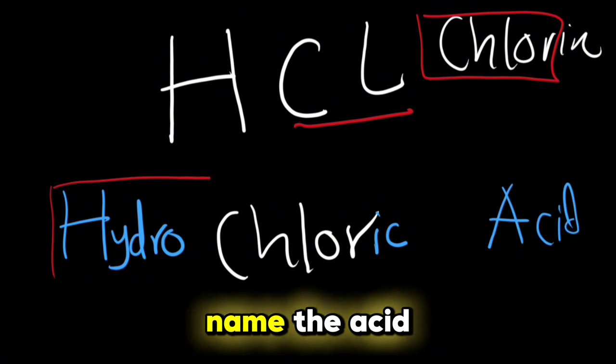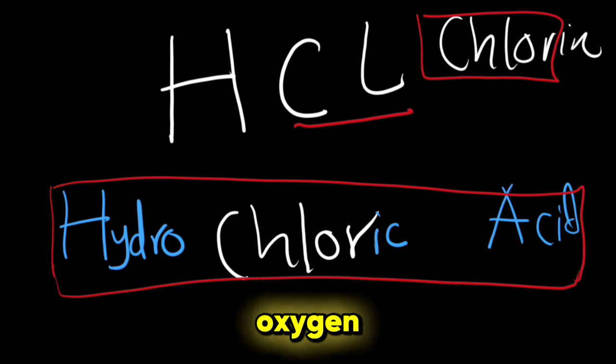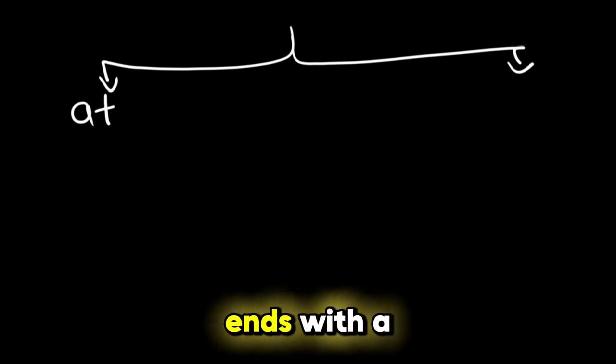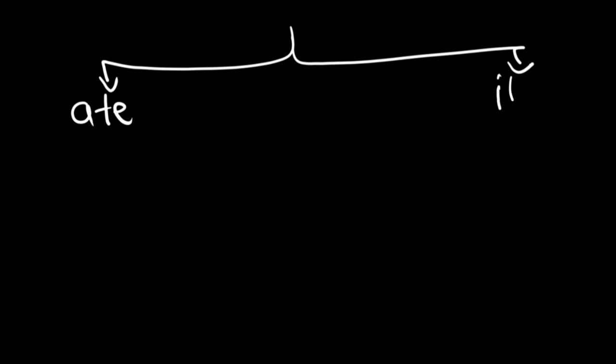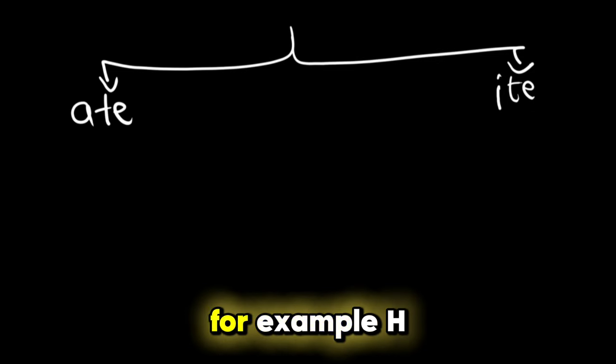Now, naming the acids which have oxygen will be classified into two: when the anion ends with ate, and when the anion ends with ite. So let's take for example HNO3.